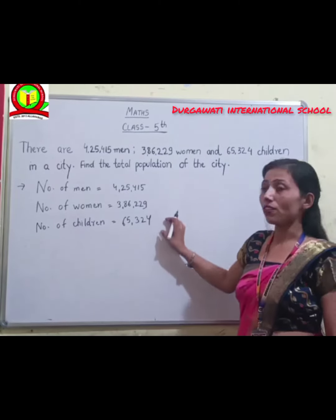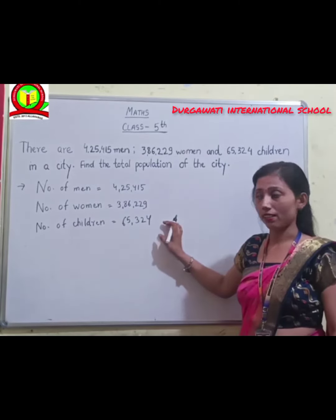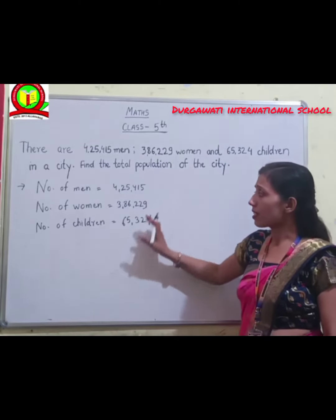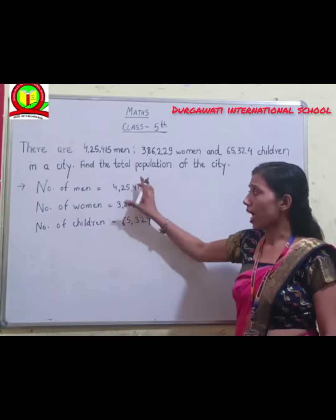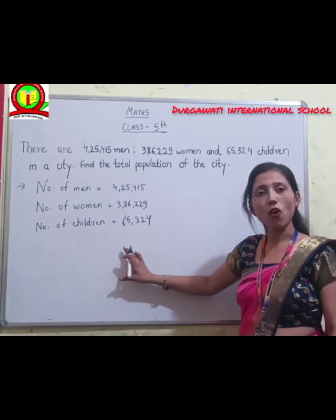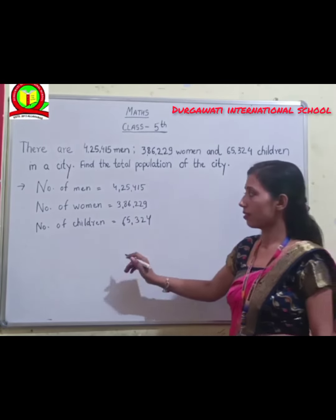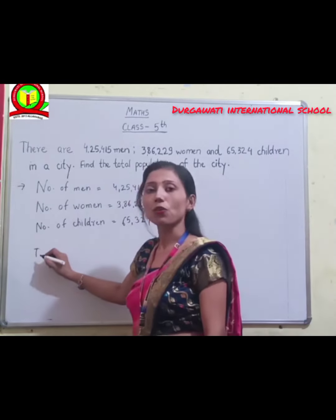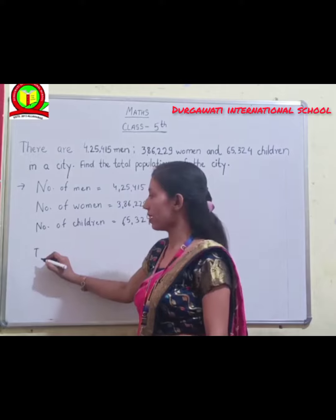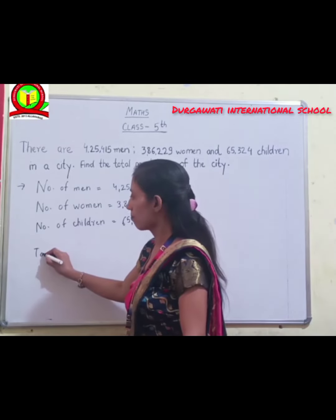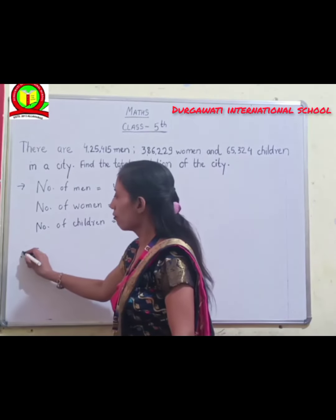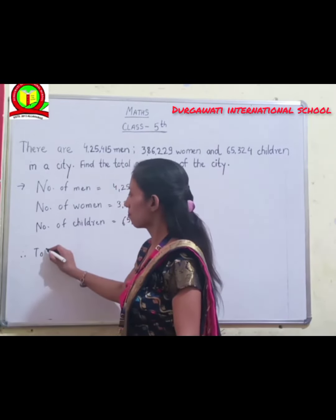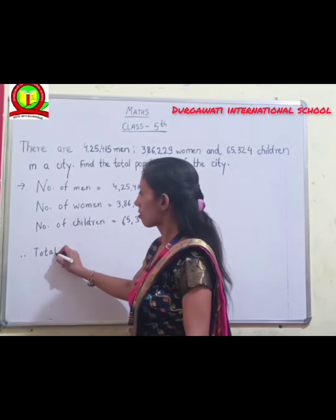Here we write all the data now. First, we have to add all these. Then we get the total population in a city. Therefore, 3,86,229 plus... you have to add all these.